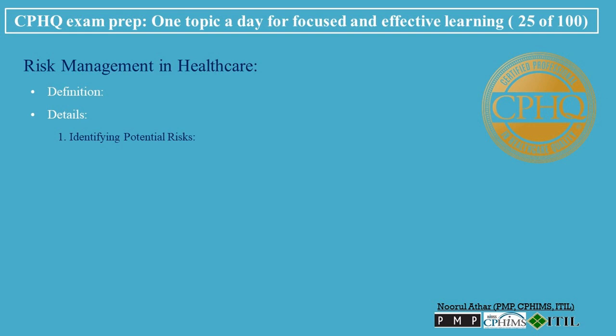Identifying Potential Risks — Clinical Care Risks: identifying areas in clinical care where there is a potential for patient harm, such as during surgery or medication administration. Operational Risks: assessing risks in the daily operations of a healthcare facility, including data privacy, staff safety, and infrastructure issues.